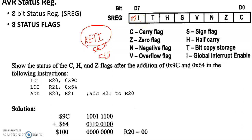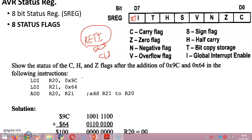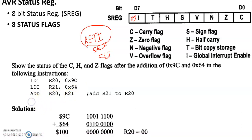Now let's see an example involving the setting and clearing of some of the flip-flops in the status register of AVR. For example, consider this program which asks the controller to add the contents of R20 and R21 registers. The contents loaded into R20 and R21 are 9C hexadecimal and 64 hexadecimal. LDI R20, 9C hex; LDI R21, 64 hex; ADD R20, R21.